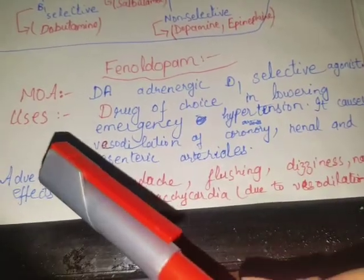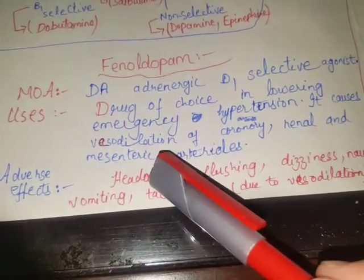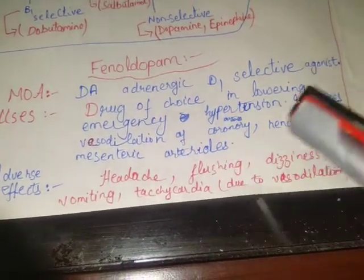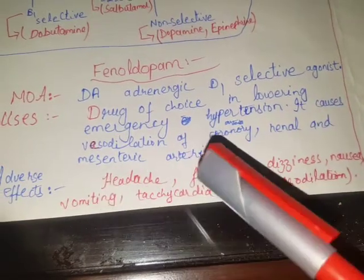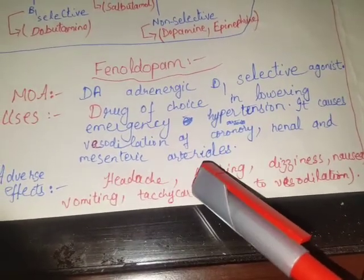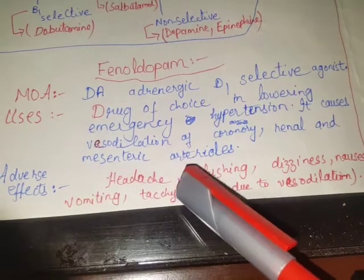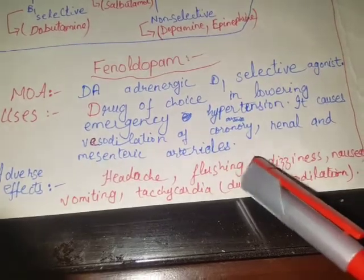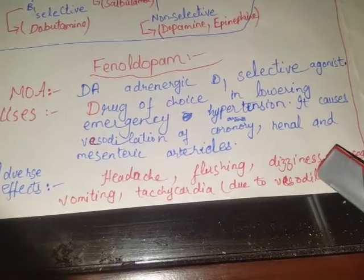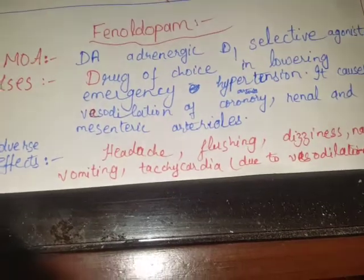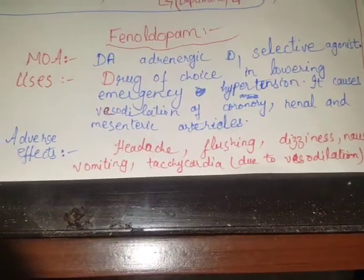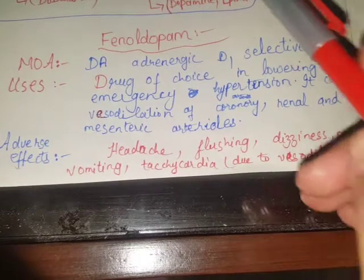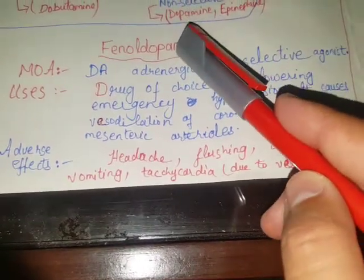The adverse effects of fenoldopam are headache, flushing, dizziness, nausea, vomiting, and tachycardia. Tachycardia is also known as reflex tachycardia because it is due to vasodilation of the blood vessels. That's all about the important antihypertensive drug fenoldopam.